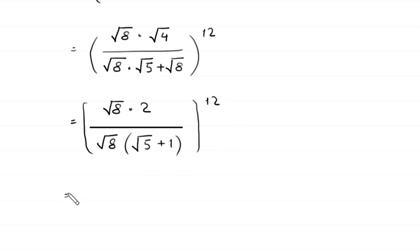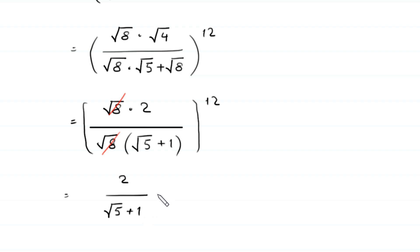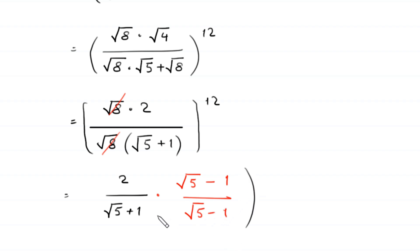Next, this square root of 8 cancels with the other square root of 8, and we are left with 2 divided by square root of 5 plus 1. To rationalize the denominator, we multiply and divide by square root of 5 minus 1 over square root of 5 minus 1, whole to the power 12.